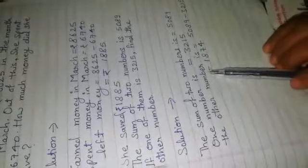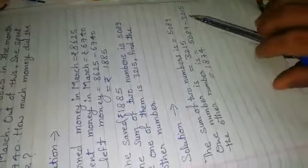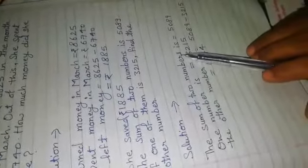How do we get the other number? We get the other number by subtracting one number from the sum of two numbers.